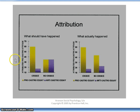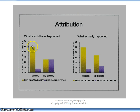On the left is what we might predict. The y-axis shows attributed pro-Castro attitude, so a higher bar means the writer was judged as more pro-Castro. In the choice condition, when the readers knew that a student could choose to write a pro-Castro essay, they made an attribution of a positive pro-Castro attitude. And if they were reading an anti-Castro essay, they made the corresponding attribution that the writer had a negative attitude towards Castro.